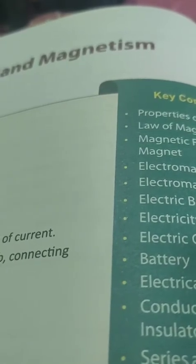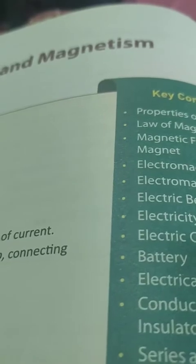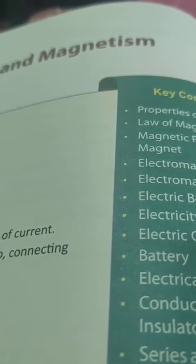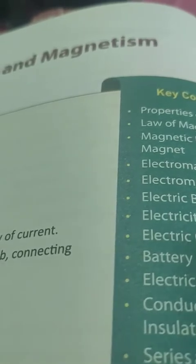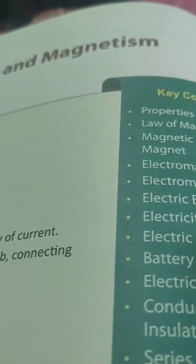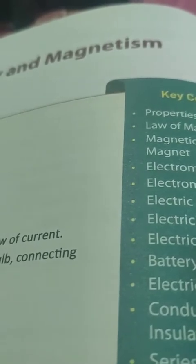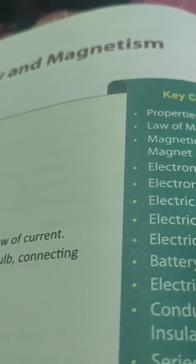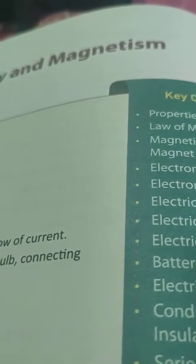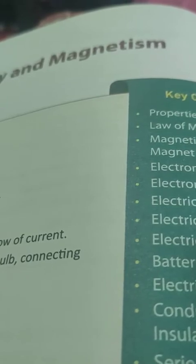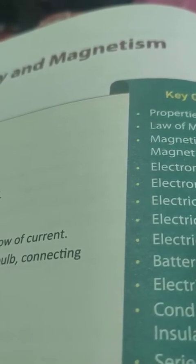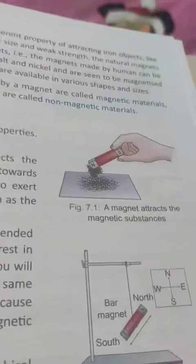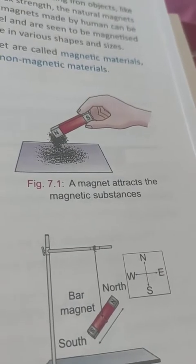The word 'magnet' has been derived from the name of the town Magnesia. The natural magnet — the ore of loadstone — being irregular in size and weak in magnetic strength was not of much use. Therefore artificial magnets such as a bar magnet, magnetic needle, horseshoe magnet, and compass are made for practical uses.